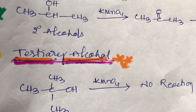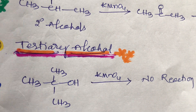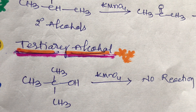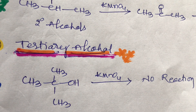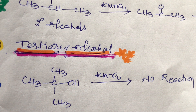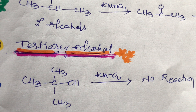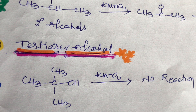Tertiary alcohols cannot be oxidized with KMnO4 or K2Cr2O7. This is very, very important: tertiary alcohols cannot oxidize with potassium permanganate or potassium dichromate.